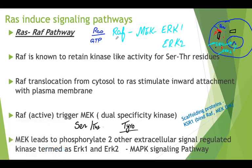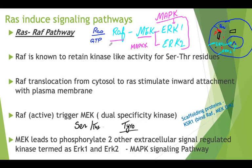ERK1 and ERK2 have an alternate name — this pathway activation is generally called the mitogen-activated protein kinase (MAPK) signaling pathway. MAPK stands for these two compounds. MEK is also termed mitogen-activated protein kinase kinase. RAF, which itself acts as an oncogen in certain cancers, can also be labeled as MAPK because it is responsible for the kinase activity of MEK, which further relates to the kinase-kinase properties of ERK1 and ERK2.